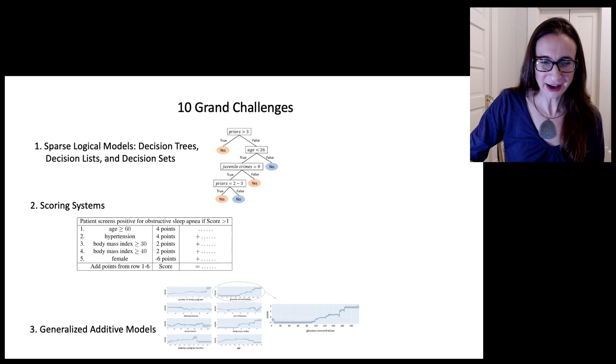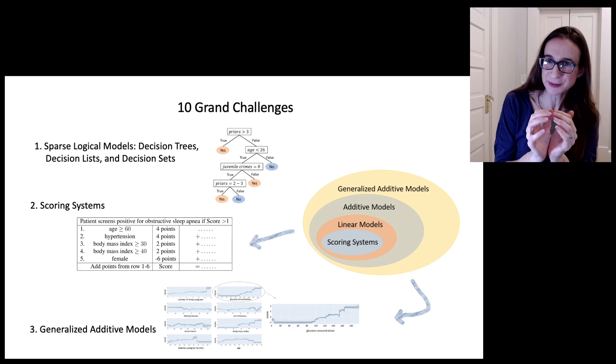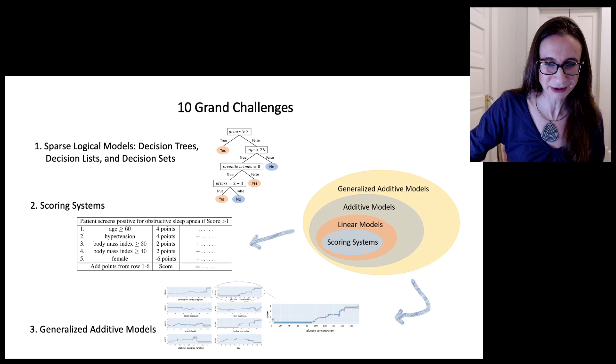Generalized additive models is the third one, and I want to point out that generalized additive models are actually a superset, like they're sort of more general than scoring systems, and scoring systems are sort of a special case of linear models. So that kind of gives you a sense of how these are related to each other.